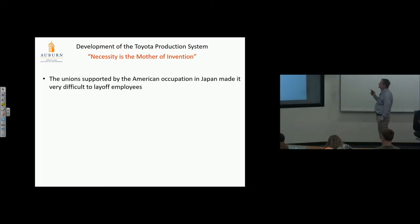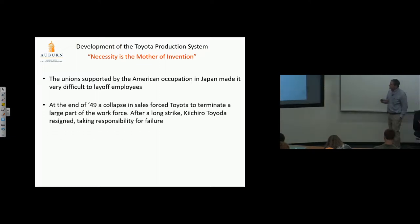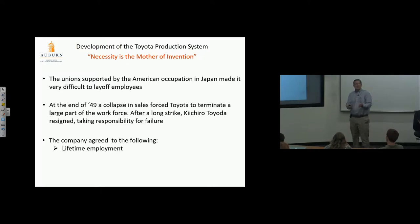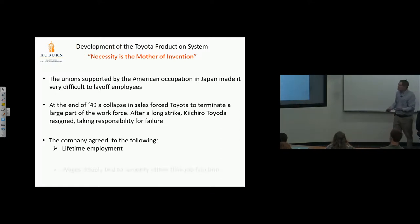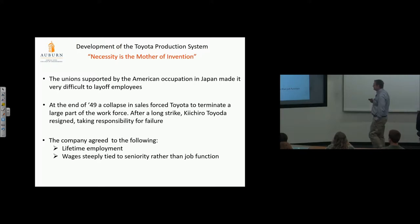Unions were supported by the American occupation in Japan, making it difficult to lay off employees. At the end of 1949, a collapse in sales forced Toyota to terminate a large part of the workforce. After a long strike, Kiichiro Toyota resigned, taking responsibility. The company agreed to lifetime employment—contrary to the term lean if you think it means getting rid of labor. They're just redeployed to solve other problems, using attrition, not layoffs.